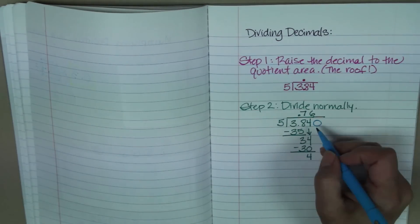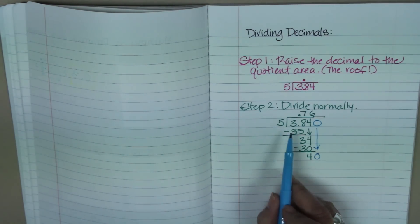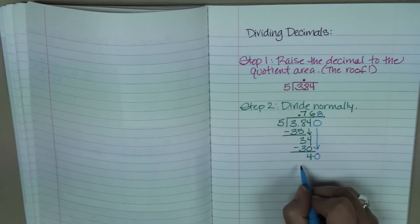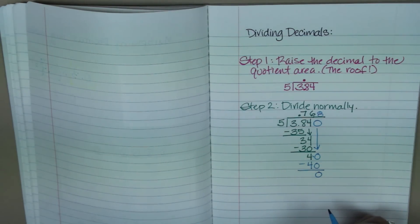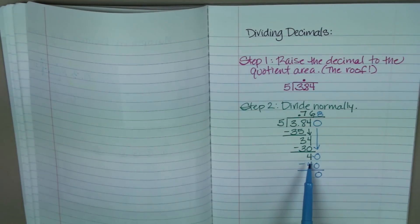Okay, so if I add that zero, I can also bring it down. And now I know that 5 goes into 40 eight times, and 8 times 5 is 40. There you go. So now you know how to, number one, divide by a decimal, and number two, get rid of a remainder.